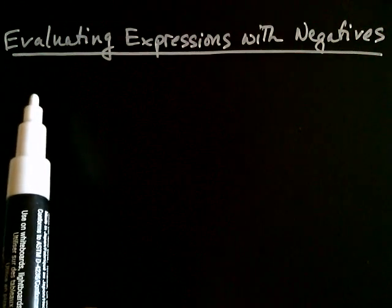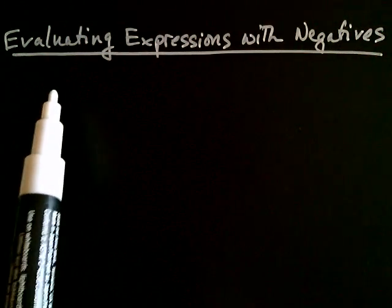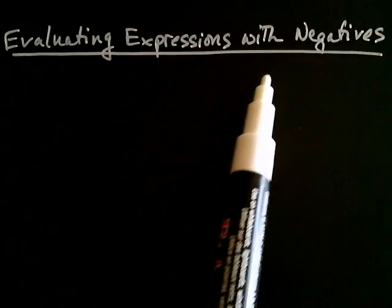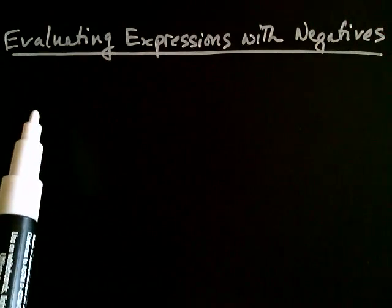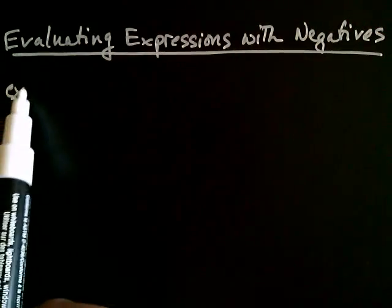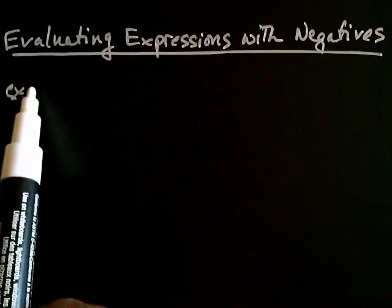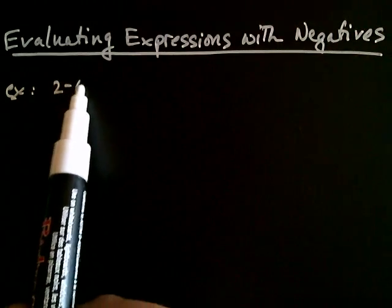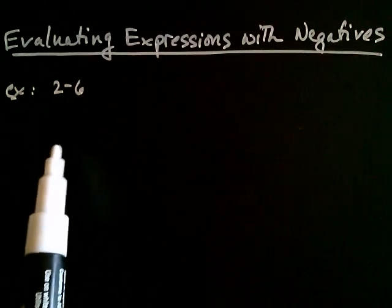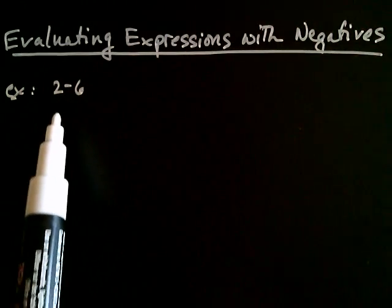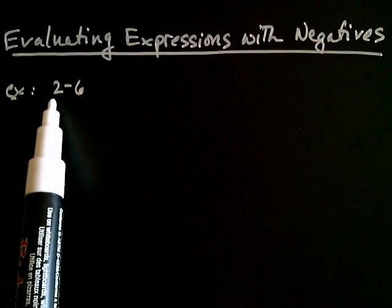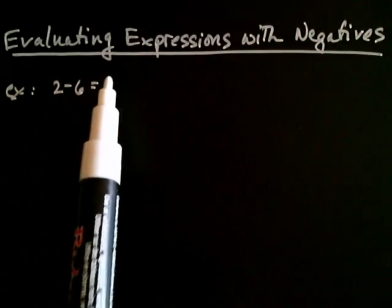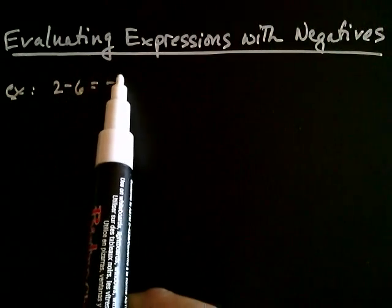In this video, we're going to discuss evaluating expressions with negatives. We've talked about subtraction before, where you have something like 2 minus 6. The way we handled this was we started at 2 and went to the left 6, and after doing that we got negative 4.